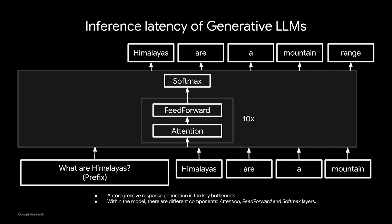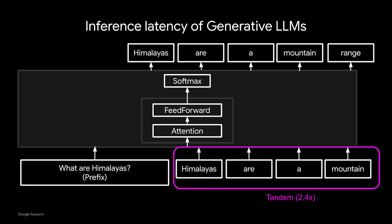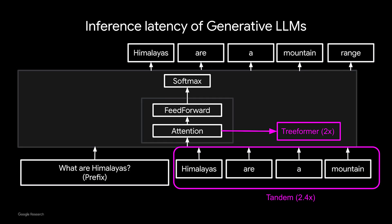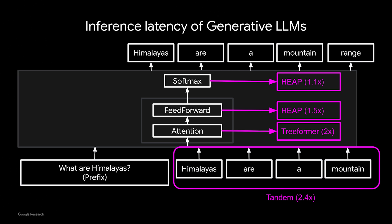A team at Google has been trying to fix this issue through a variety of ideas. We have a technique called Tandem, which is able to reduce the inference latency of PaLM-2-style models by as much as 2.4x without any quality degradation. Then we have a technique called Treeformer that can make attention computation significantly cheaper for very large context lengths — quite handy for retrieval-augmented models. And we have a technique called Heap, which addresses the memory boundedness of feedforward and softmax layers.